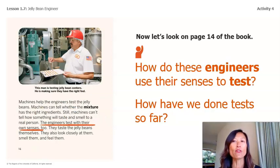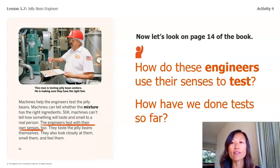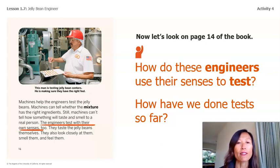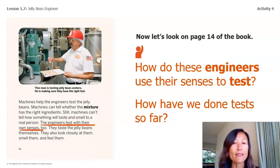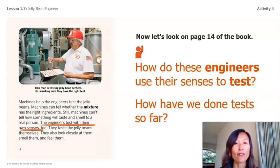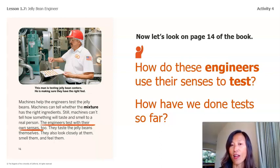Let's look at page 14 of the book. How do these engineers use their senses to test? They taste jelly beans, look closely at them, smell them, and touch them. And how have we done tests so far? Together we made mixtures with glue ingredients and water, we let the pasta dry in each mixture, and then we shook them to see which was the stickiest.